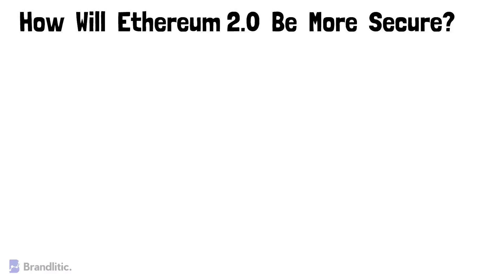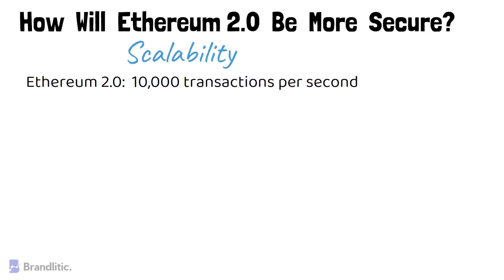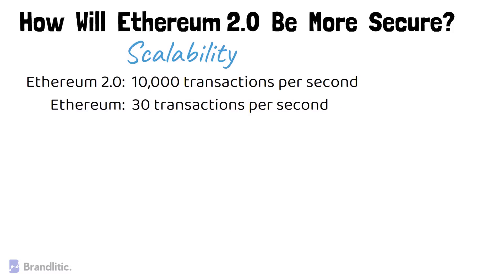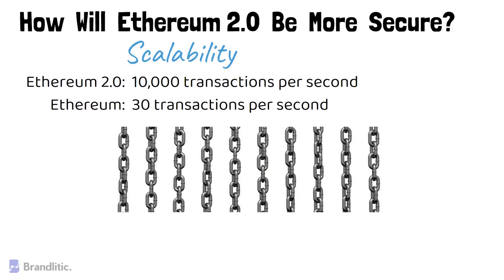How will Ethereum 2.0 be more secure? The most important advantage of Ethereum 2.0 is its scalability. Ethereum 2.0 will have shard chains, enabling it to conduct up to 10,000 transactions per second, whereas Ethereum currently supports only 30 transactions per second. You will also be able to say goodbye to delays and network congestion seen in the Ethereum blockchain, as these will be eradicated to a certain extent in Ethereum 2.0. The implementation of shard chains speeds up the network and helps scale it more easily, as transactions are handled in parallel chains instead of consecutive ones.